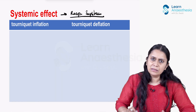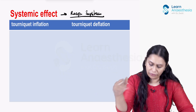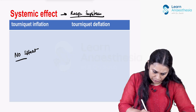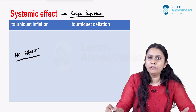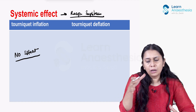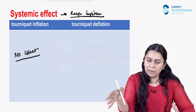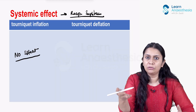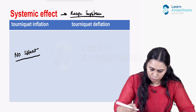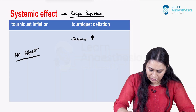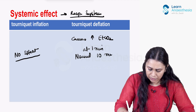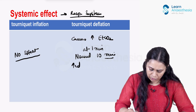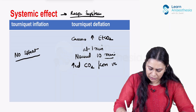Regarding the effect on the respiratory system: tourniquet inflation has no effect on the respiratory system. During tourniquet deflation, however, carbon dioxide is released from the limb that was not receiving adequate blood supply. This increases PaCO2 and ETCO2 levels. Tourniquet deflation causes an increase in end-tidal CO2 at 1 minute, returning to normal by 10 minutes, due to increased carbon dioxide from the venous blood of the isolated limb.